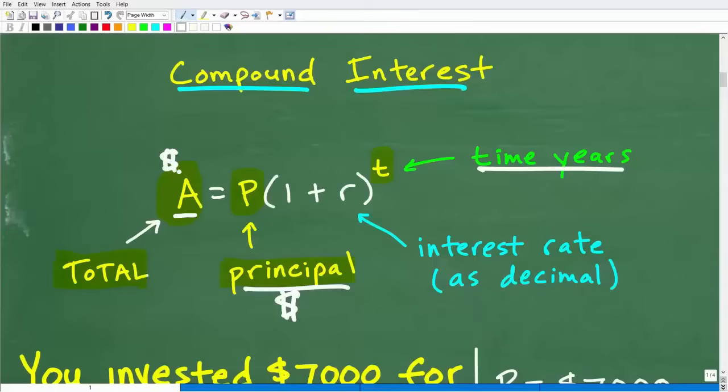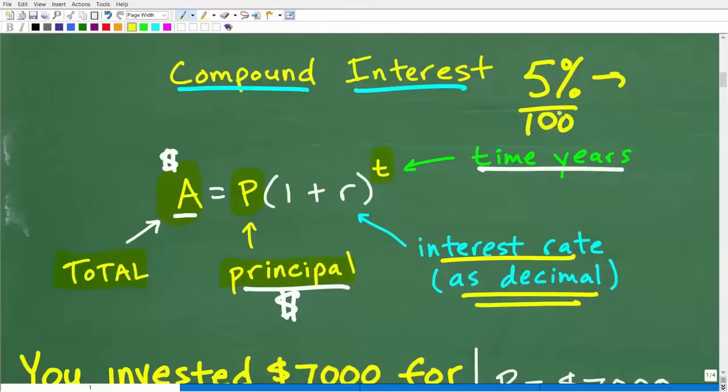All right. Now, let's talk about R. R is the interest rate. And in this particular problem, it's 5% annual compound interest. And the key here is that we need to express this interest rate as a decimal. So 5% as a decimal. How do we go from a percent to a decimal? Well, easy. All we have to do is divide by 100 or just move that decimal point over two places to the left. So that's 0.05. Okay. So basically, this is the formula.